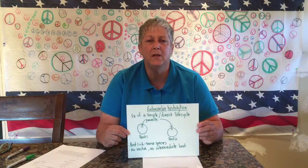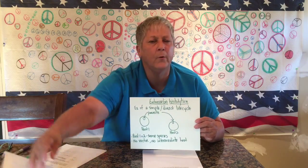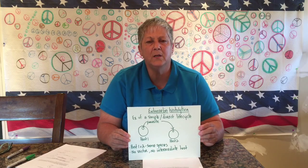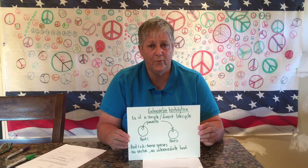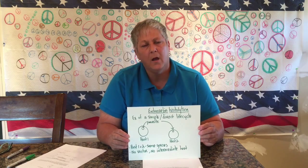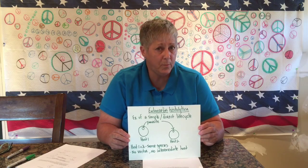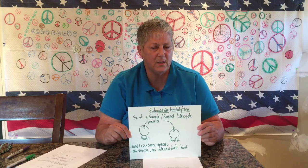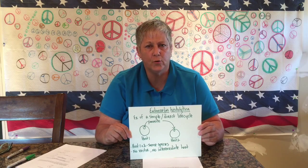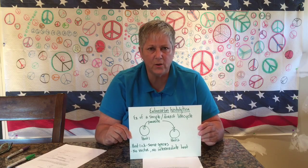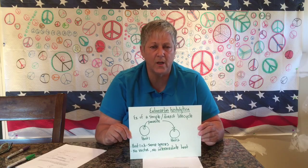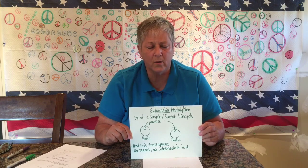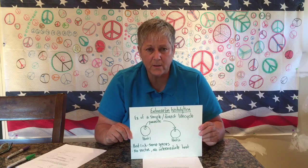Entamoeba histolytica, the protozoan — you should have this life cycle in your outline. Entamoeba histolytica is a parasitic protozoan whose life cycle we refer to as simple or direct. Entamoeba has two stages in its life cycle: the trophozoite, which is the active stage that reproduces and causes damage to the host; and the cyst stage, which is a dormant stage with a thick resistant coating, passed in the feces of the infected individual.